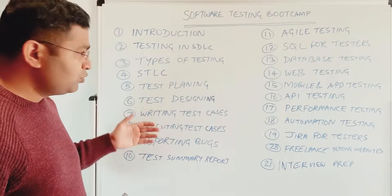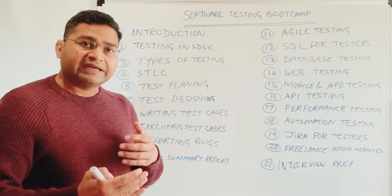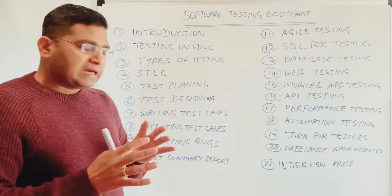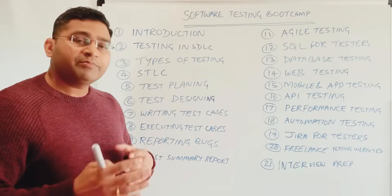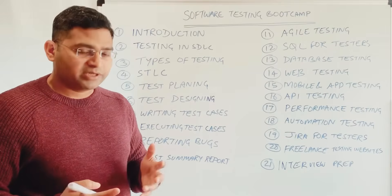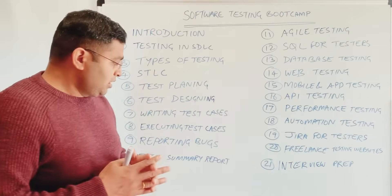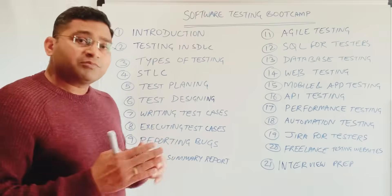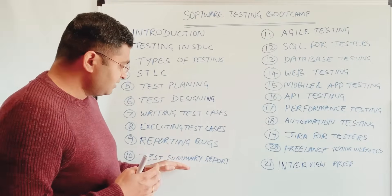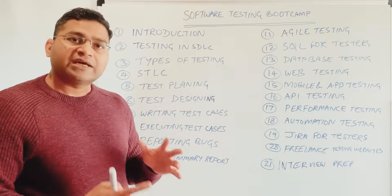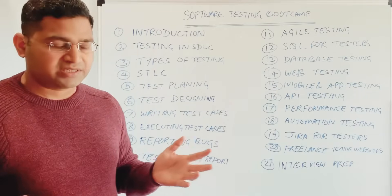I'll also cover how to report bugs — defect reporting and tracking is very important. Finally, we'll cover preparing the test summary report, which is very important for reporting to stakeholders. I'll cover that in both the traditional approach and in agile — how you prepare the test summary report.